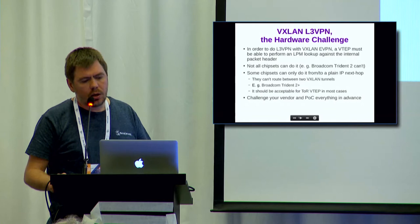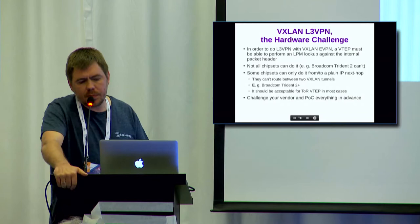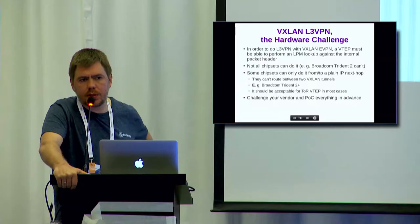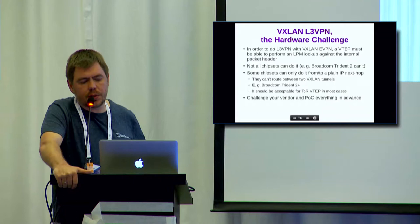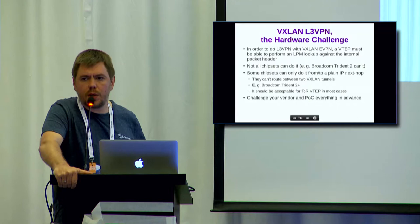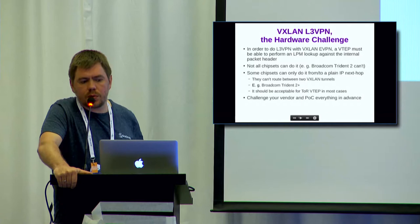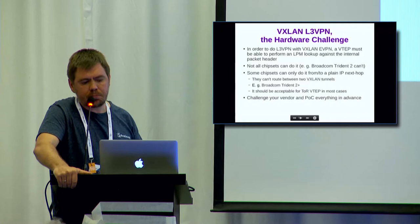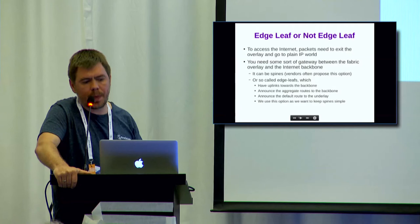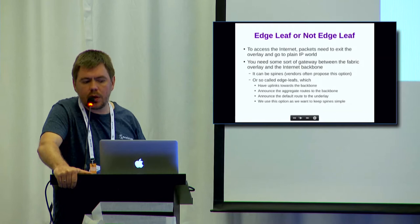Now, what we are doing using VXLAN L3 VPN and its hardware challenges. Of course, we have some difficulties when we want L3 VPN because they must know something to do. If you are going to do it, you have to be very careful while consulting with your vendors. In order to do L3 VPN with VXLAN EVPN, the VTEP must be able to perform an LPM lookup against the internal packet header. I advise you to be very sensitive to this issue before you start doing that. The next issue is how you can use the Internet, or at a certain moment you need to make some gateway between the fabric overlay and the Internet backbone. There are different approaches.